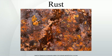Rust consists of hydrated iron oxides Fe2O3·nH2O and iron oxide hydroxide. Given sufficient time, oxygen, and water, any iron mass will eventually convert entirely to rust and disintegrate. Surface rust is flaky and friable, and provides no protection to the underlying iron, unlike the formation of patina on copper surfaces.